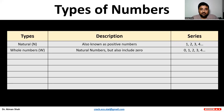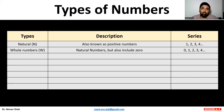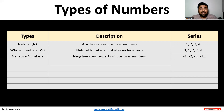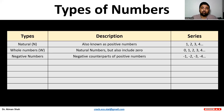Then we have whole numbers. Whole numbers include 0 and natural numbers. The series starts from 0: so 0, 1, 2, 3, 4, 5 up to infinity. Then we have negative numbers. Negative numbers are the negative counterparts of positive numbers. The range is from minus 1 to minus infinity: minus 1, minus 2, minus 3, minus 4 up to minus infinity.